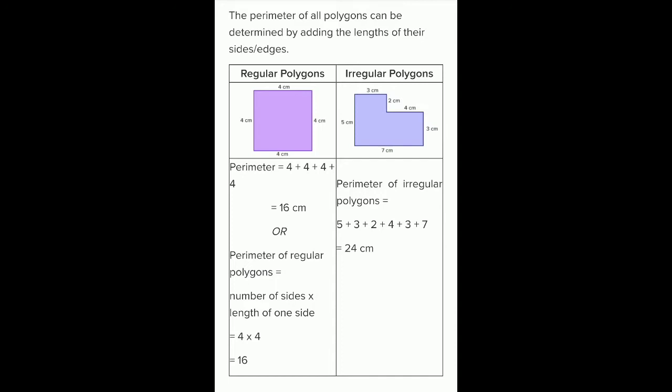Here there are 4 sides and the length of one side is 4 centimeters. So 4 into 4 gives us 16 centimeters. In case of an irregular polygon, we have to add all the sides. So the perimeter of an irregular polygon is 5 plus 3 plus 2 plus 4 plus 3 plus 7, which equals 24 centimeters.